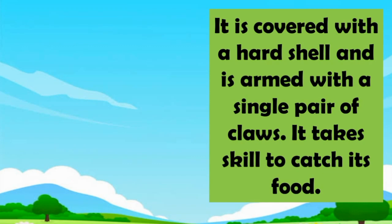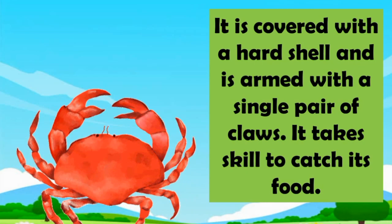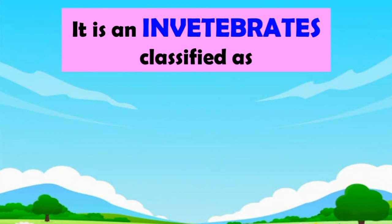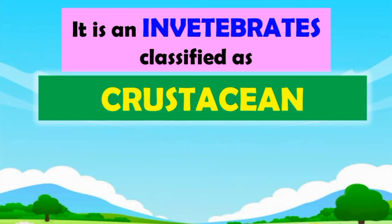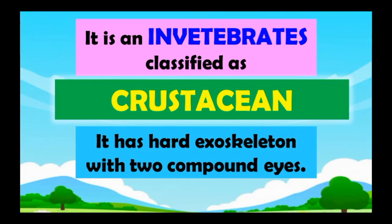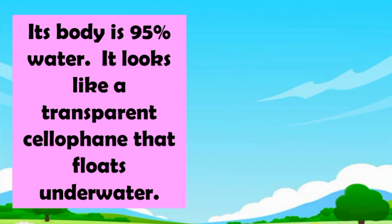Guess what? It is covered with a hard shell and is armed with a single pair of claws. It takes skill to catch its food. What is it? Crab! A crab is an invertebrate classified as crustacean. It has a hard exoskeleton with two compound eyes.